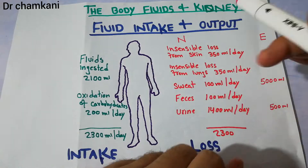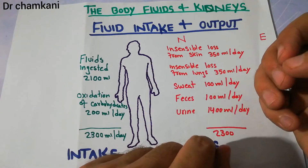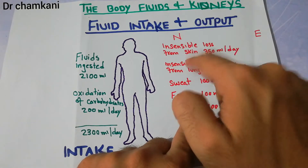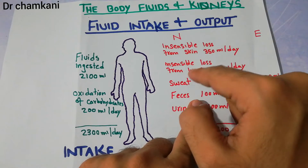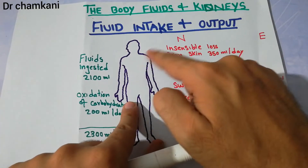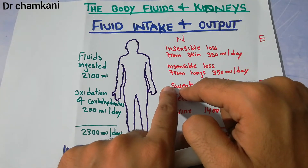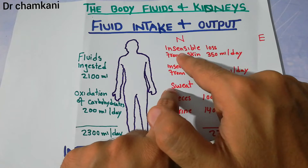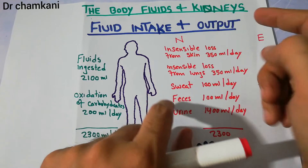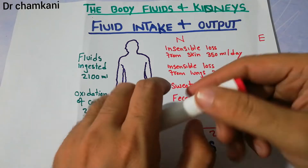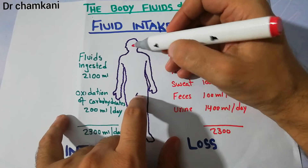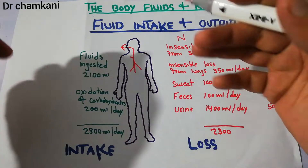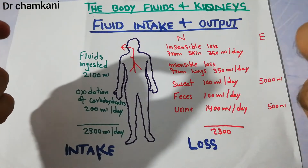The daily fluid loss occurs through different ways. First is the insensible loss from the skin — this is not due to sweating. Fluid is lost from the surface of the skin even in the absence of sweat pores; even in people who do not have sweat pores, there is insensible loss from the skin, and that is around 350 ml per day. The insensible loss of fluid from the lungs is also around 350 ml per day.